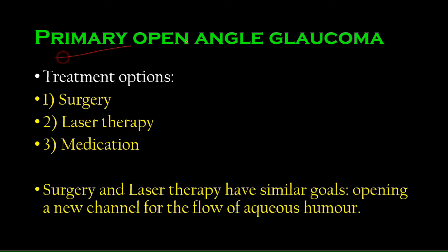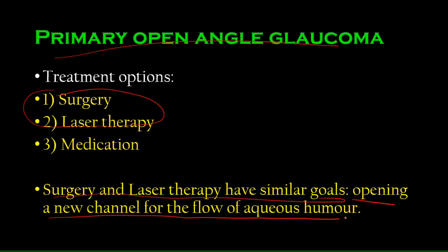How would you treat primary open-angle glaucoma? There are two procedures: surgery and laser therapy, both with the same goal — opening a new channel for the flow of aqueous humor, or perforating the old trabecular meshwork. By surgically or through laser creating more openings in the trabecular meshwork, you ease the outflow of aqueous humor and relieve the symptoms.